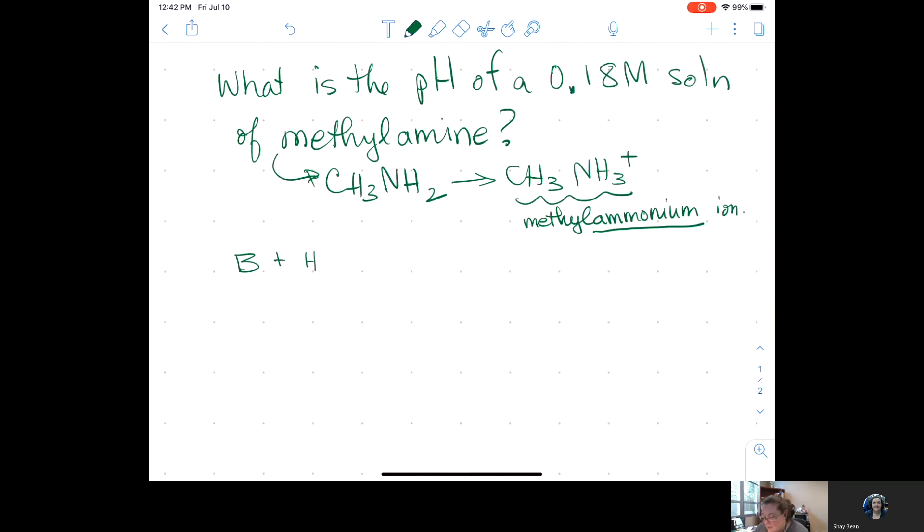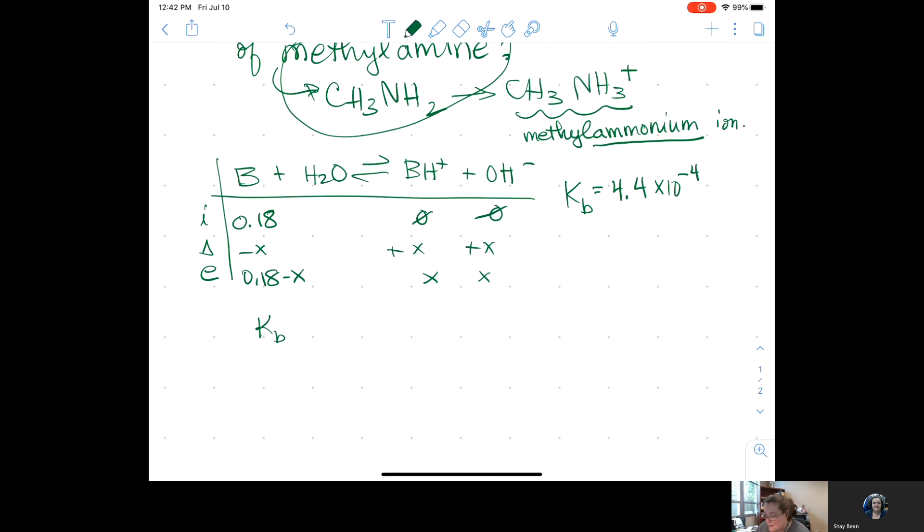I'm just going to write it as B. So my equilibrium reaction looks like this: B + H2O ⇌ BH+ + OH-. I look up the KB value for methylamine. This is the base. He has a KB value. The KB value from our tables in our textbook is 4.4 × 10^-4. It's equal to products over reactants. Everything is one-to-one in weak acid and weak base problems. This is 0.18 molarity, this is 0 and 0, minus x, plus x, plus x.